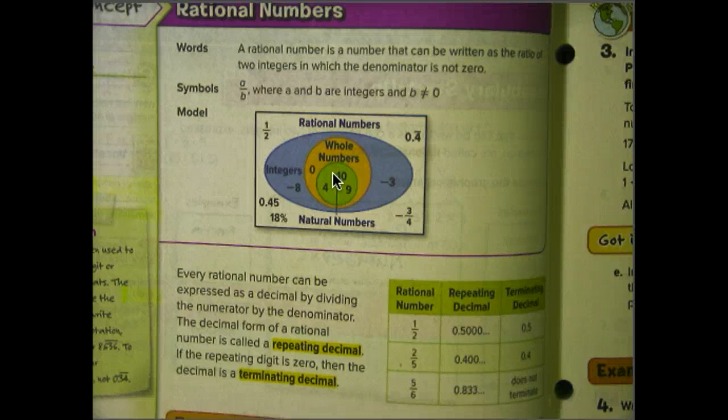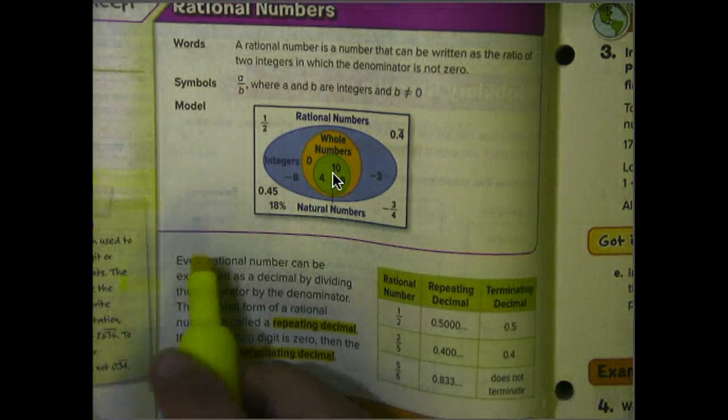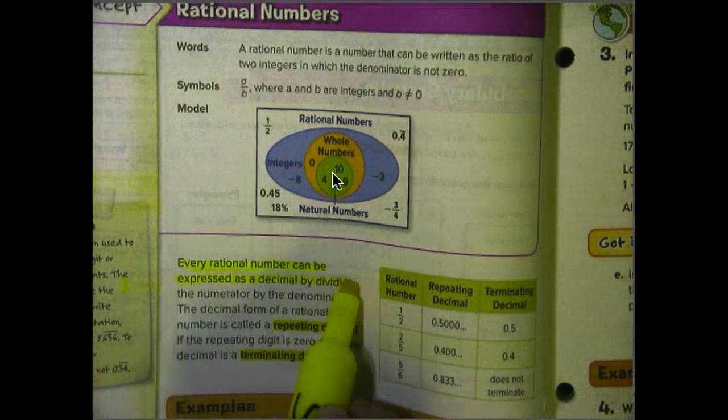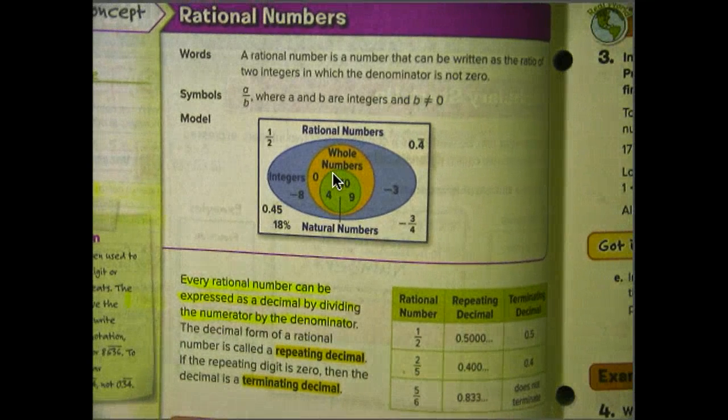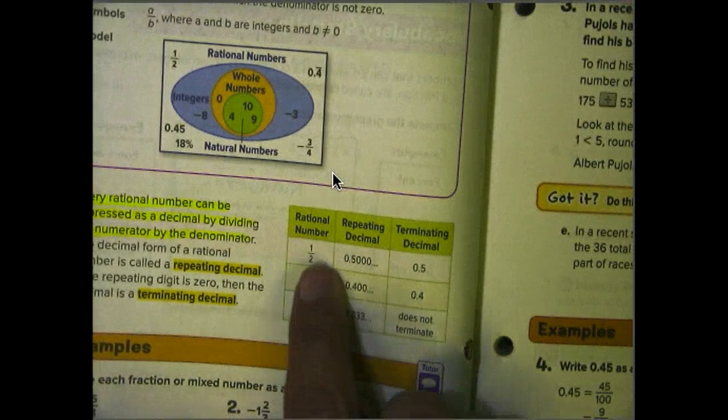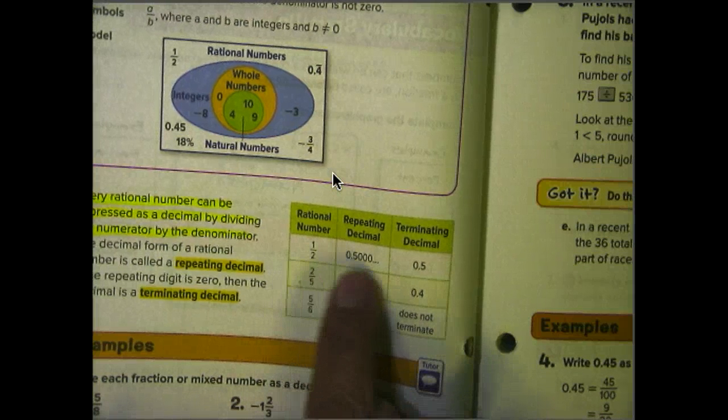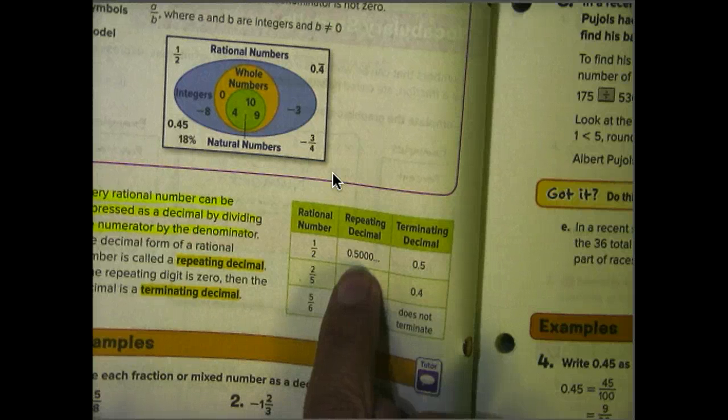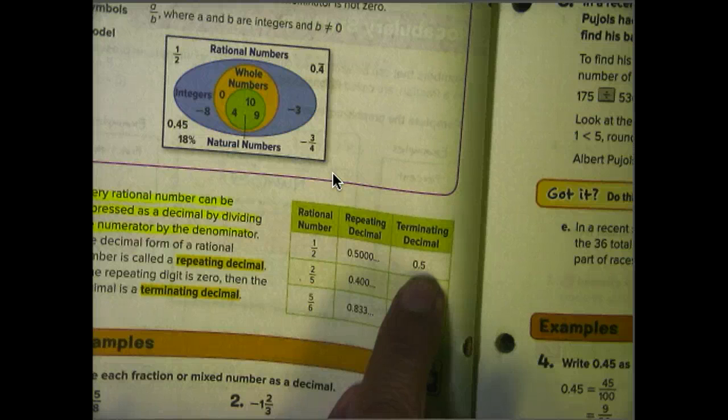So every rational number can be expressed as a decimal by dividing the numerator by the denominator. This is something that you should have done in your previous math classes. The decimal form of a rational number is called a repeating decimal. If the repeating digit is zero, then the decimal is a terminating decimal. And we give some examples over here. So one half, if I divide the numerator by the denominator, one divided by two, I get 0.5000. Since the repeating number is a zero, this is a terminating decimal, 0.5.